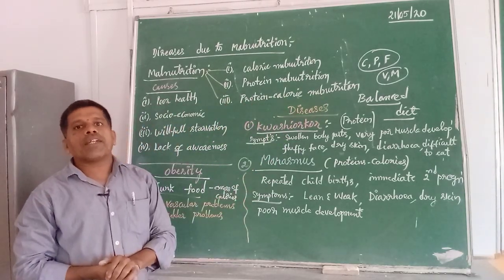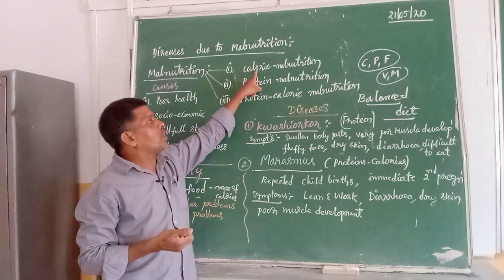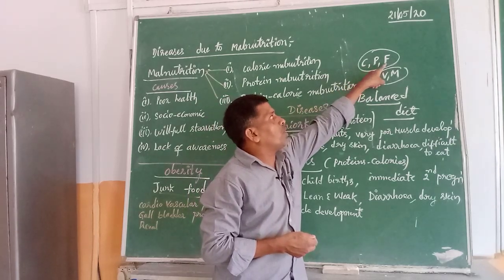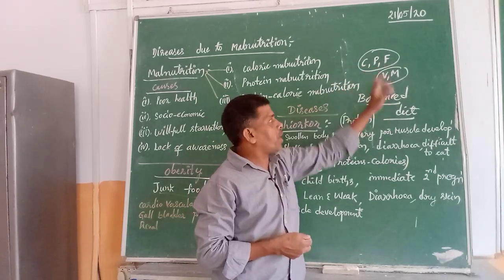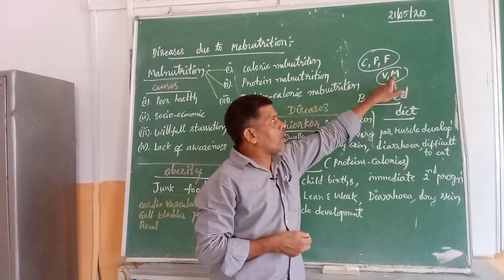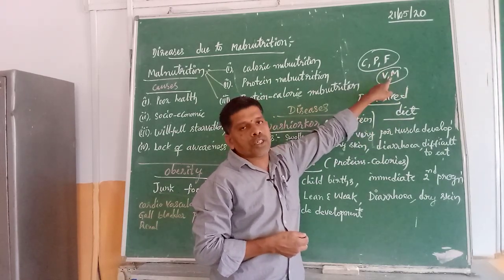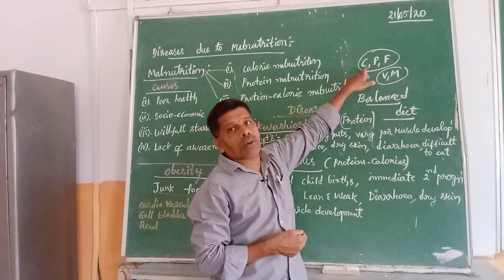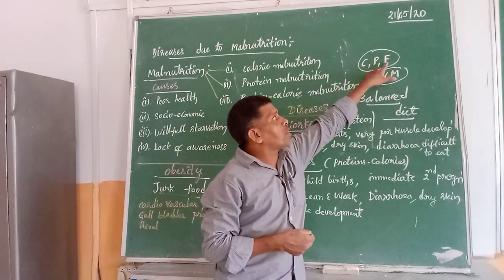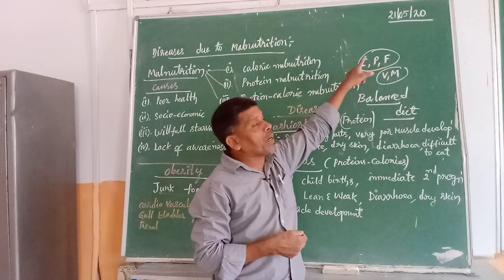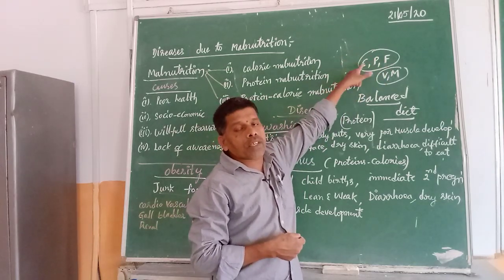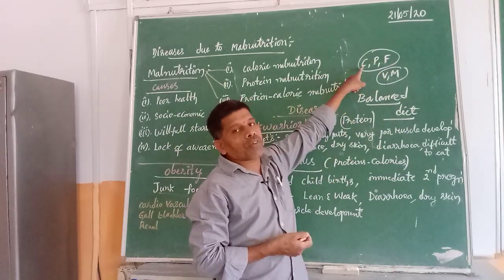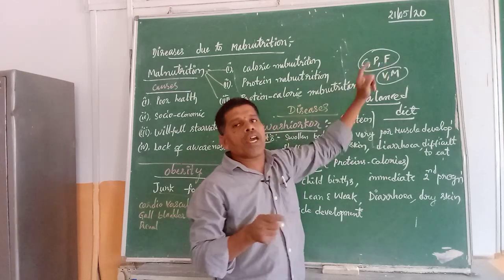Malnutrition means deficiency of nutrients. We generally take carbohydrates, proteins, and fats as our major food — that is why they are called macronutrients. Vitamins and minerals are taken in smaller quantities and do not require digestion — they are easily absorbed. But complex molecules like carbohydrates, proteins, and fats require the digestion process, and particular enzymes are needed to break them down into simpler substances. The purpose of taking carbohydrates and fats is energy production.